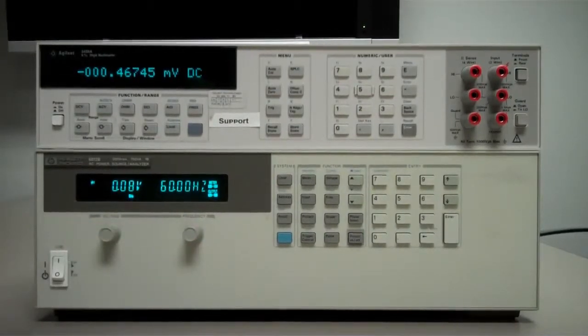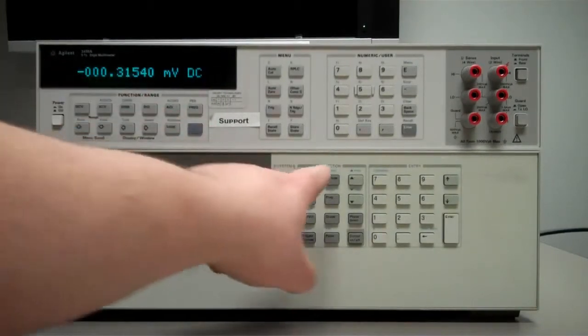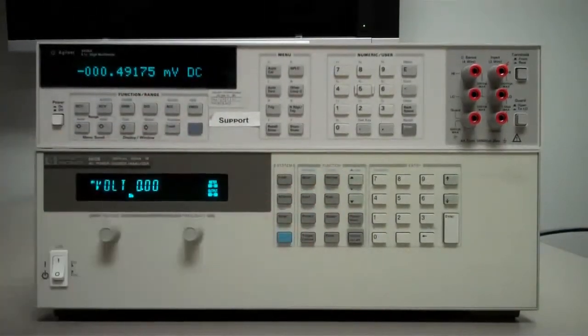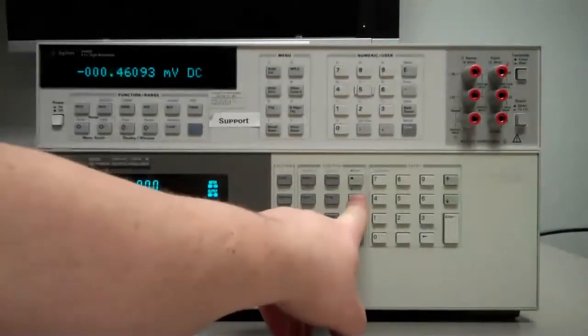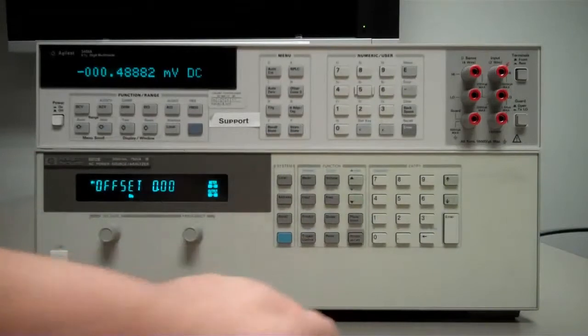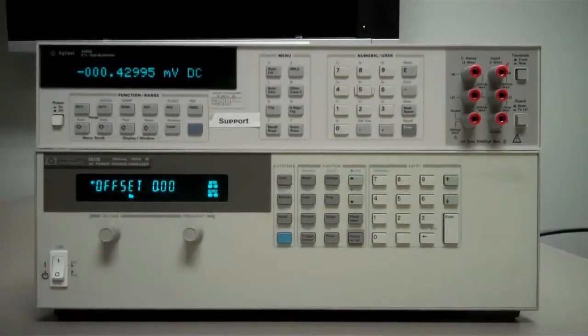The next thing we're going to do is set the voltage. Hit the voltage key right here and that brings up the voltage menu. We're going to scroll down using these arrow keys until we see offset. Right now the offset is set to zero.